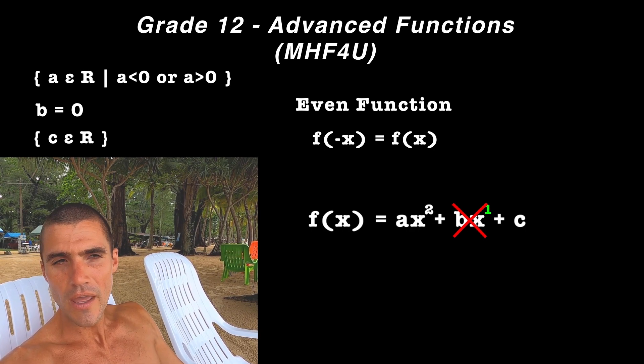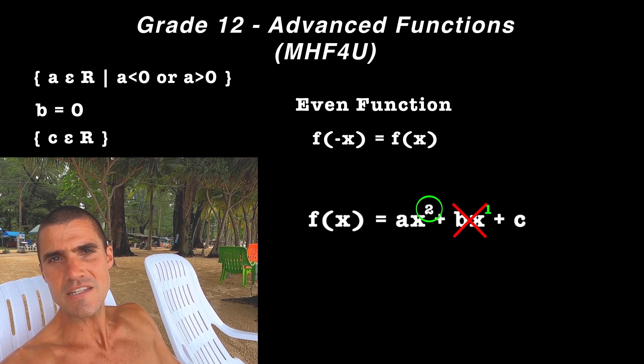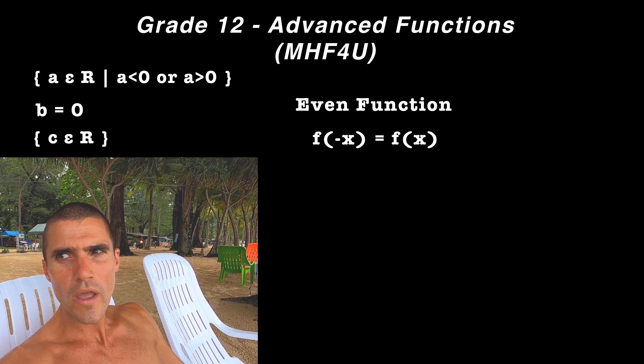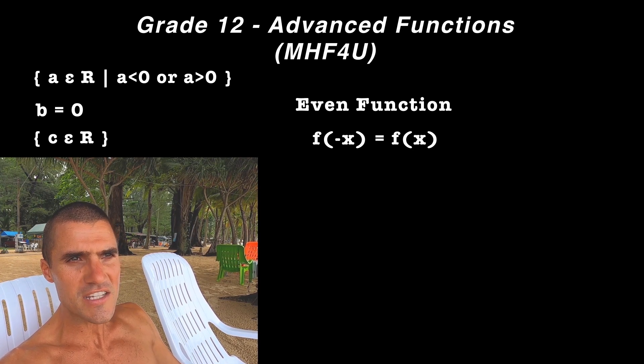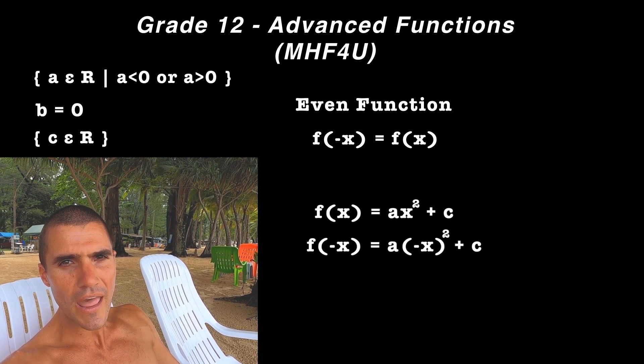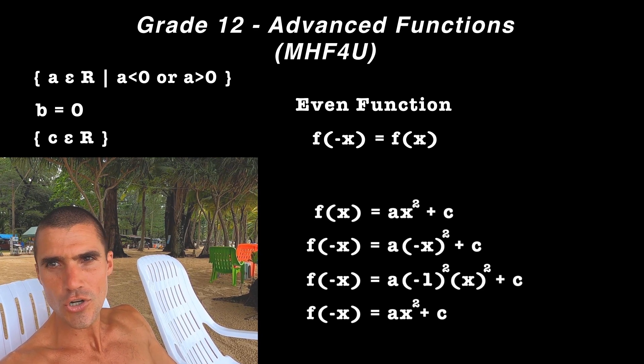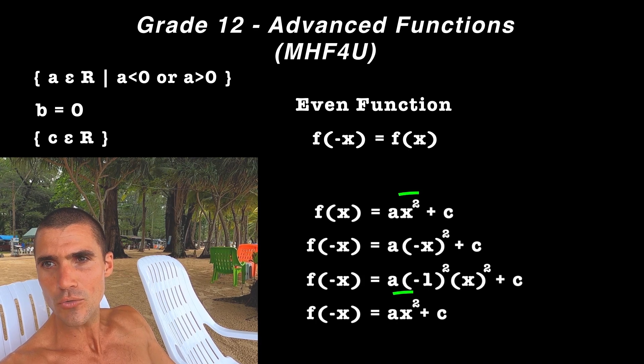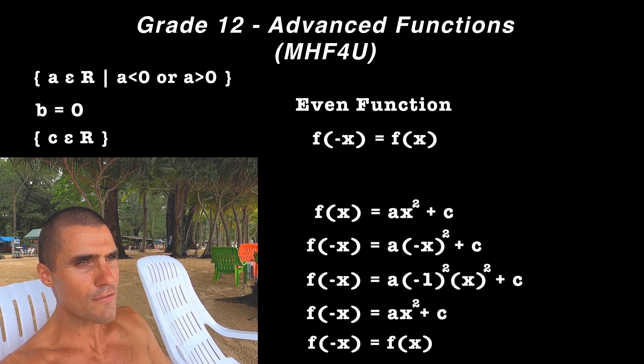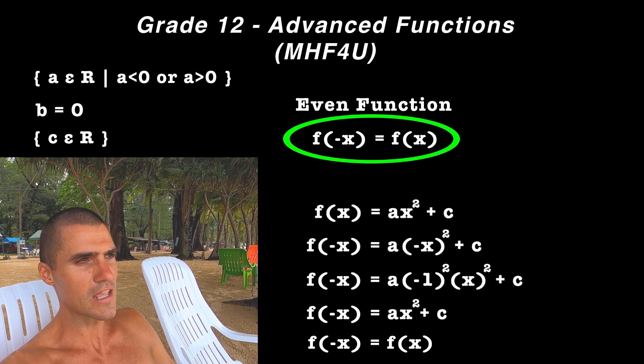And then notice that ax² the exponent is two, which is even, so that could be there. And then the c, which is a constant, that could be there as well. And if we test it with that algebraic condition of f(-x) equaling f(x), if we plug in -x into ax² + c, we would end up with a(-x)² + c. And then the (-x)² would just turn into positive x² again, and we would end up with the original function ax² + c. And so we could tell that f(-x) is equal to f(x), and we know that when that condition is met, then we're dealing with an even function.